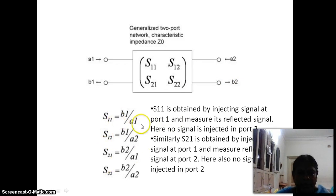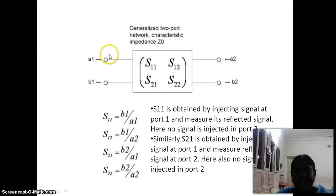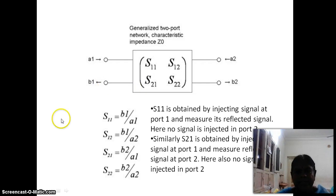S11 equals B1/A1, S12 equals B1/A2, S21 equals B2/A1, and S22 equals B2/A2. S11 is obtained by injecting a signal at port 1 and measuring its reflected signal with no signal injected at port 2 — a wave is injected at port 1 and the reflected wave is measured.